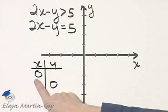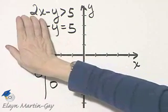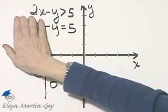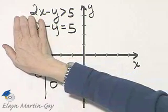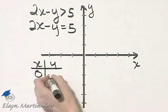To find the y-intercept, let x be 0. If x is 0, I would be solving negative y is equal to 5, so that would mean y is negative 5.